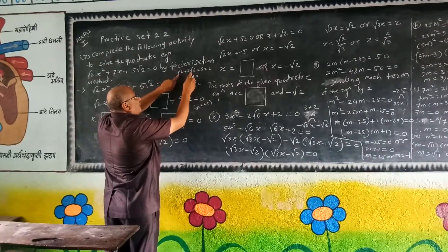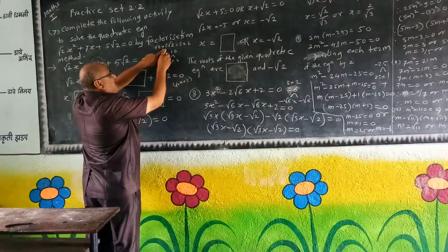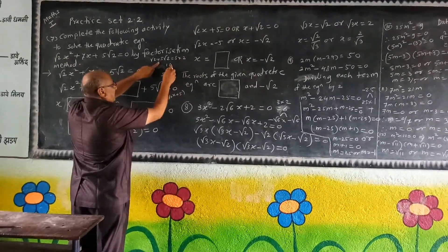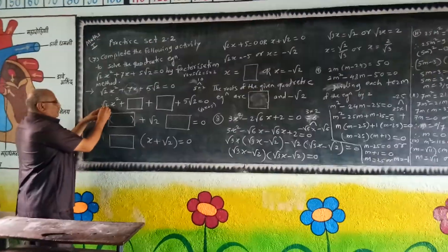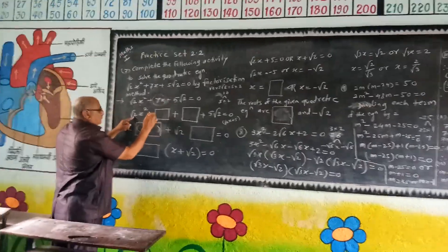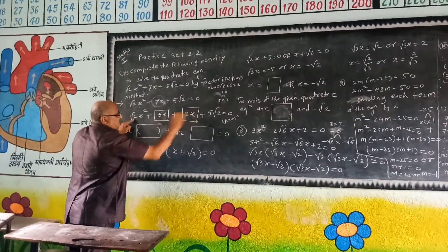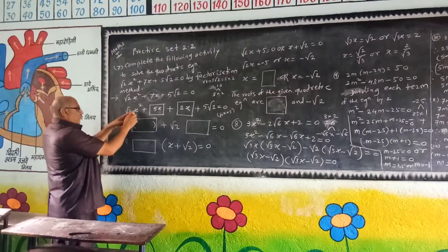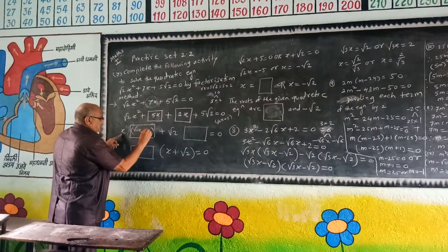So root 2, multiply 2 and it remains 5, so 5 into 2 gives 10. The factors are 5 and 2. So root 2 x squared plus 7x becomes root 2 x squared plus 5x and 2x, splitting the middle term.